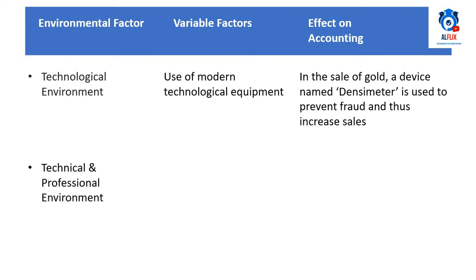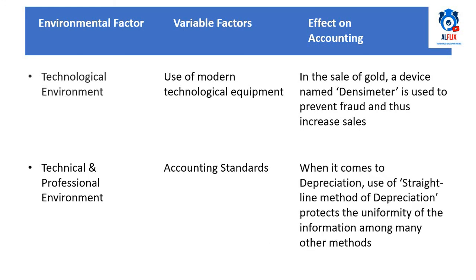Technical and professional environment is the use of numerous techniques to measure and make financial evaluations of assets in a business. A variable factor we would be looking into is accounting standards. When it comes to depreciation, the use of the straight-line method of depreciation ensures uniformity of information among many other methods.